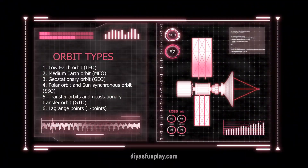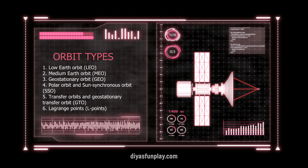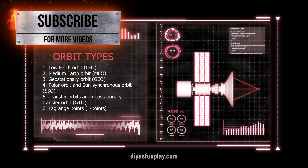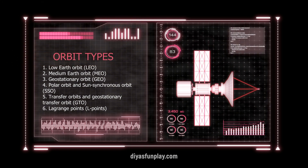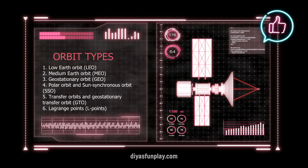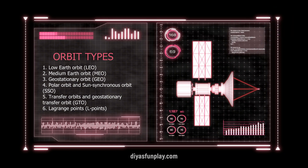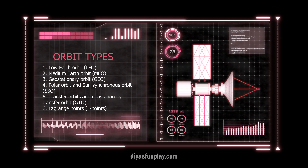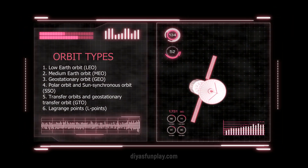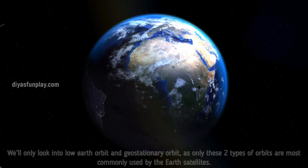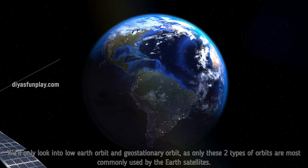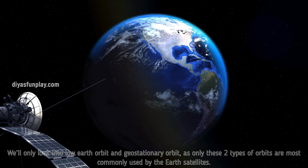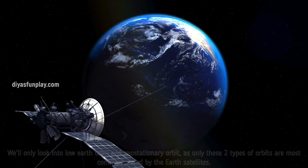The six different types of orbits used by artificial satellites are: low earth orbit, medium earth orbit, geostationary orbit, polar orbit or sun synchronous orbit, transfer orbits and geostationary transfer orbit, and Lagrange points. We will only look into low earth orbit and geostationary orbit as only these two types of orbits are most commonly used by earth satellites.